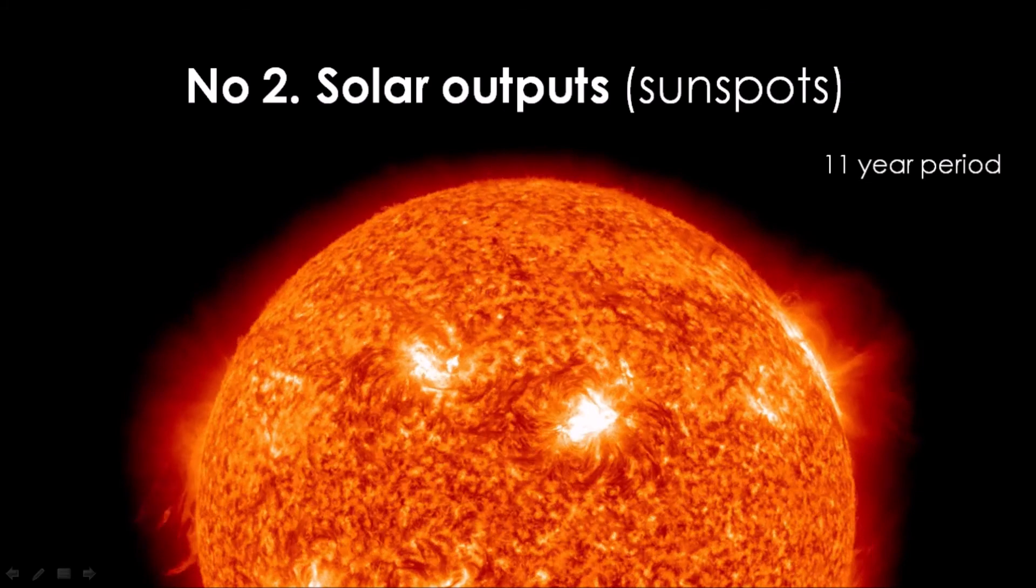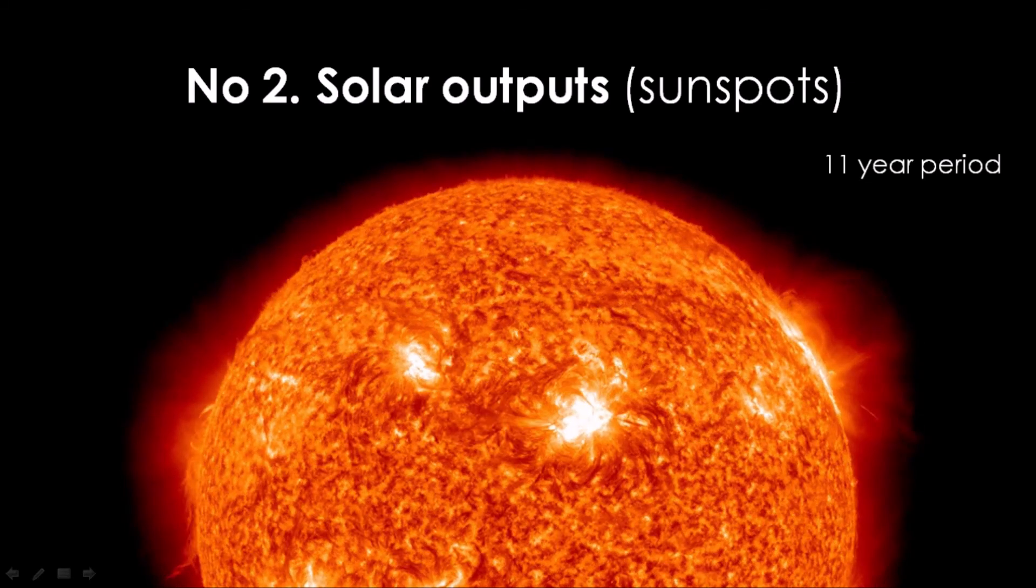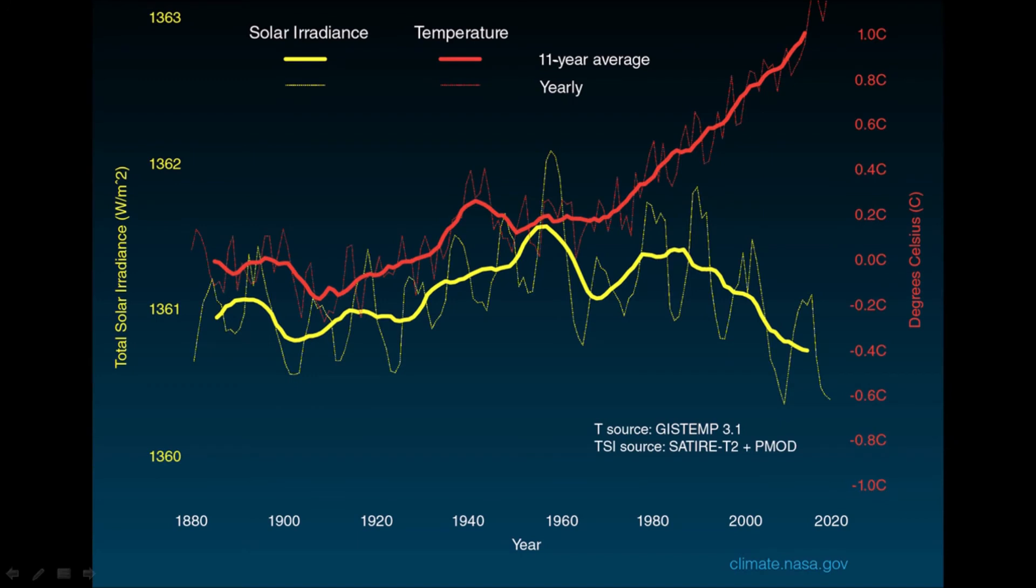The theory goes that the more sunspot activity the Sun produces, the more heat the Sun gives out. But if we look at previous data collected on solar output, the data actually shows that the overall solar output from the Sun has barely changed in the last 50 years, and therefore solar output cannot be responsible for the cause of climate change seen from the 1970s.